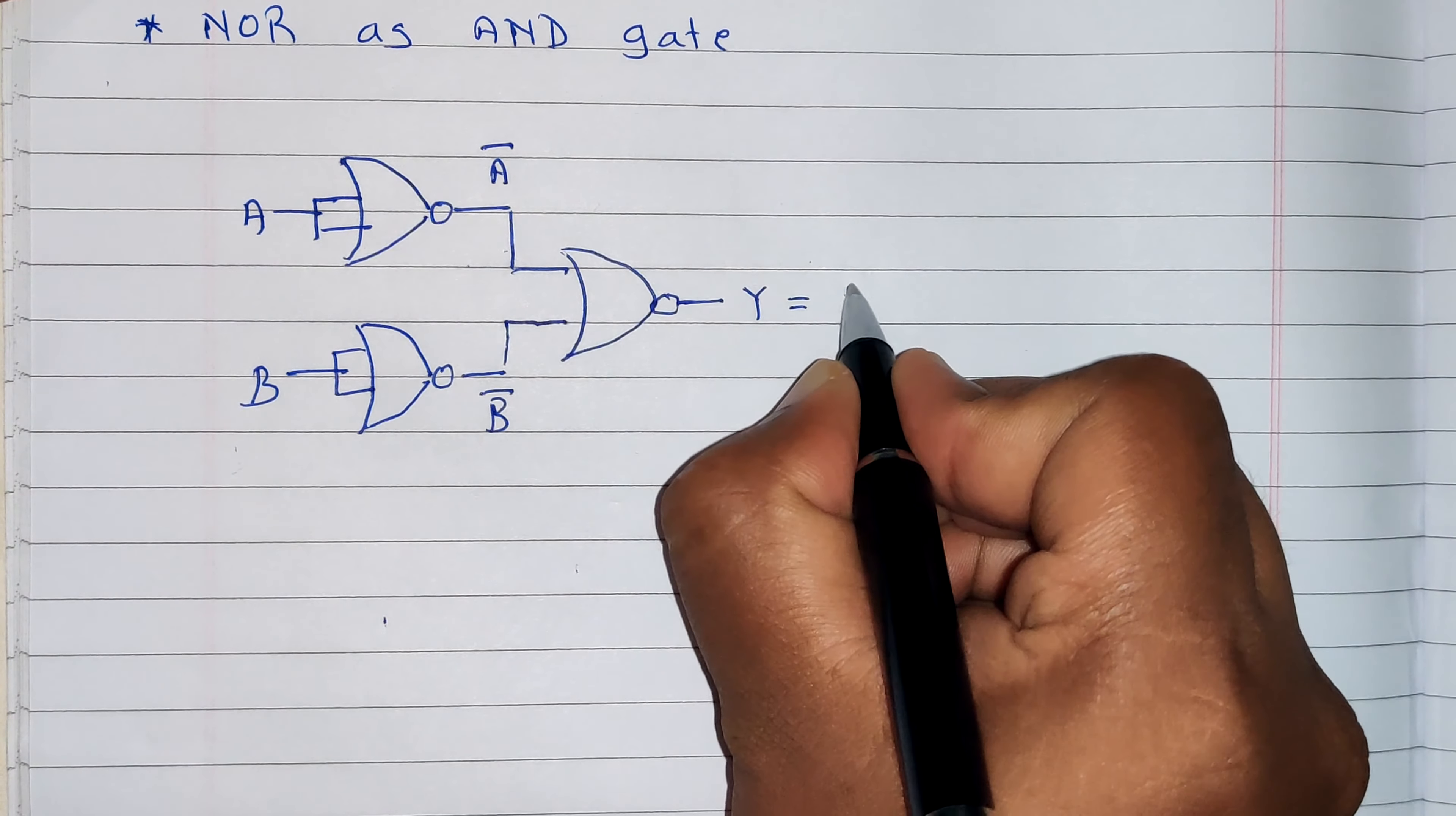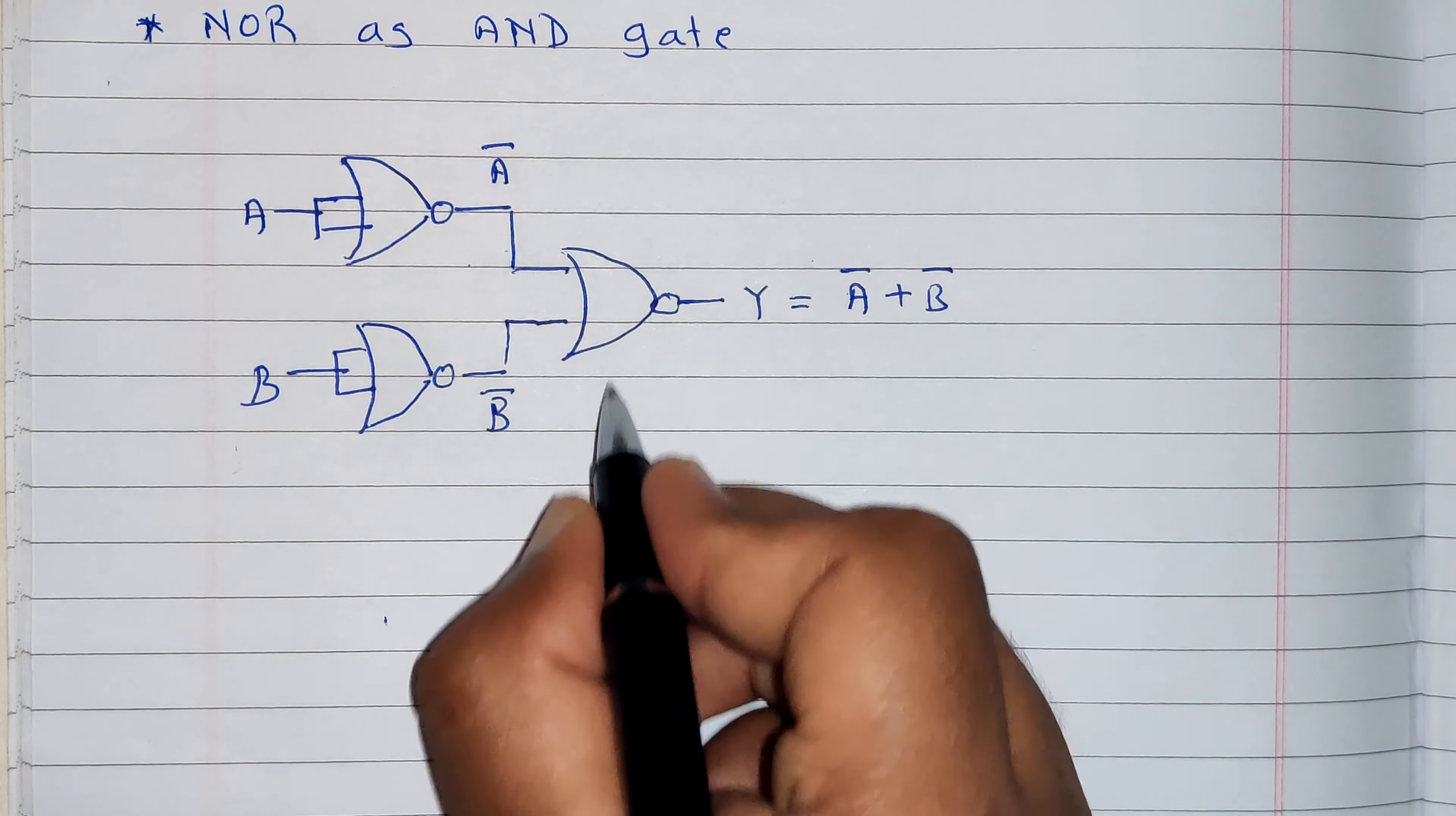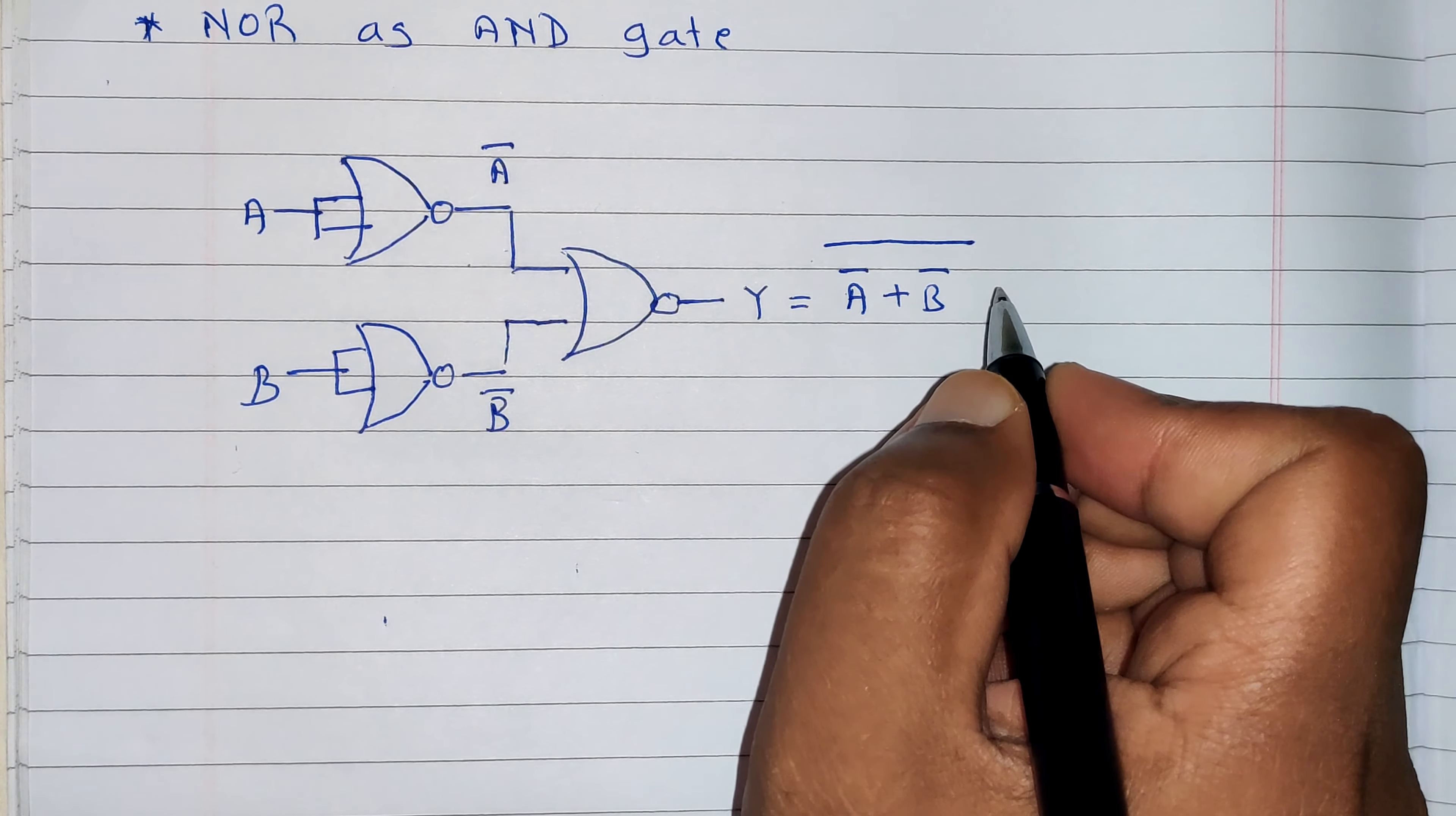Then the equation will become A bar plus B bar, which is the addition of two inputs, and because of this bubble we will get the whole bar: A bar plus B bar the whole bar.